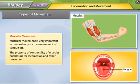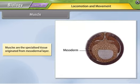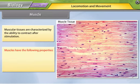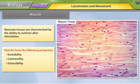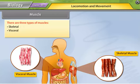Muscles are specialized tissues originated from the mesodermal layer. Muscular tissues are characterized by the ability to contract after stimulation. Muscles have the following properties: excitability, contractility, extensibility, and elasticity. There are three types of muscles: skeletal, visceral, and cardiac.